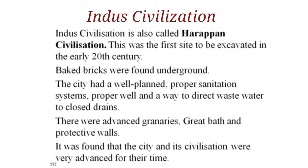Books were found and it was understood that the city had a well-planned, proper sanitation system — proper wells and systems to direct wastewater to closed drains. There were advanced granaries, great baths, and protective walls. It was found that the city and its civilization were very advanced for their time, with a lot of advanced systems all around.